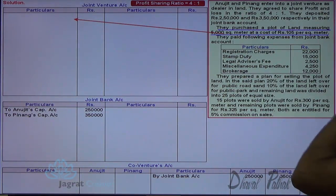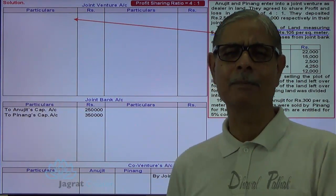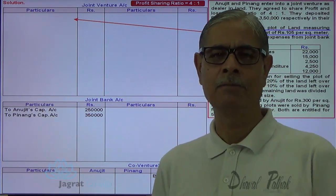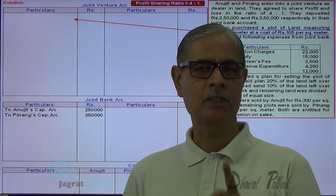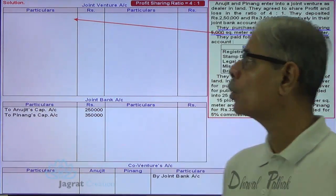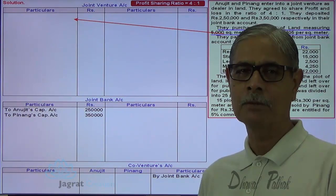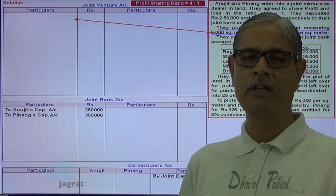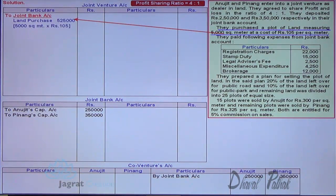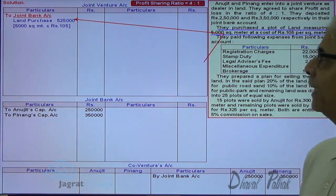They purchased 5,000 square meters at a cost of 105 per square meter, so 5,000 × 105 = 5,25,000 is the purchase price. Though land is purchased, in joint venture business — a short-term partnership — no going concern concept is applied. So even if assets are purchased, joint venture account is to be debited. The land is not identified as a fixed asset; any purchases are identified as revenue purchases. So the purchase of land is treated as a revenue item and debited to joint venture account. Payment is made from the bank — bank is the giver, credit the giver — so bank account is credited.